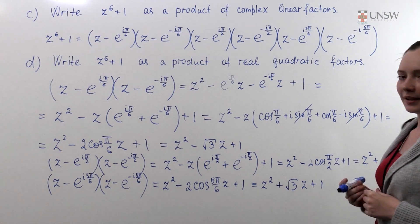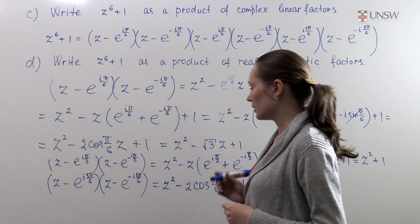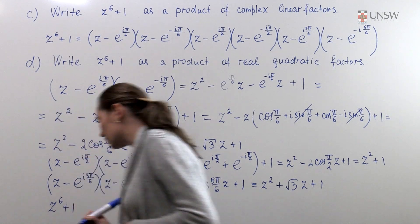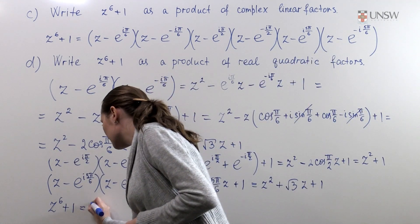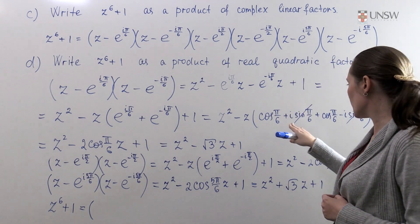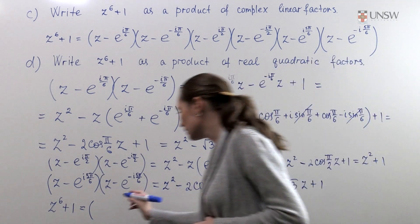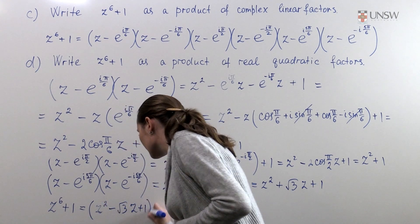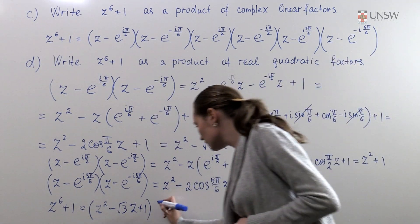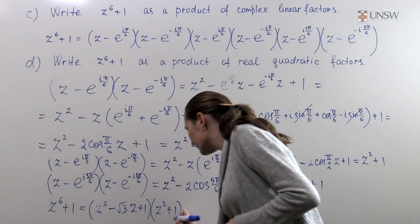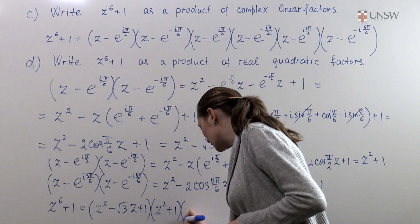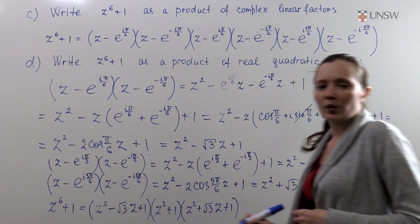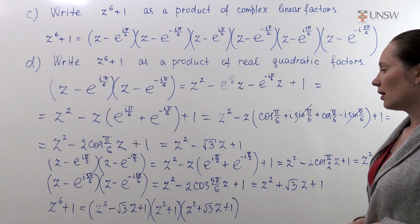So finally we write down the product of all these factors. We get z to the power 6 plus 1 equals the first bracket z squared minus √3·z plus 1, times the second bracket z squared plus 1, times the third bracket z squared plus √3·z plus 1. So we have indeed obtained the factorization of this polynomial using real quadratic factors.